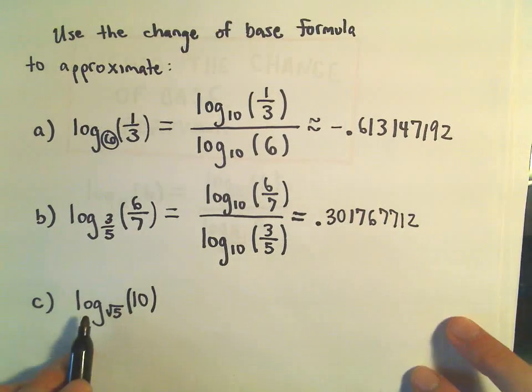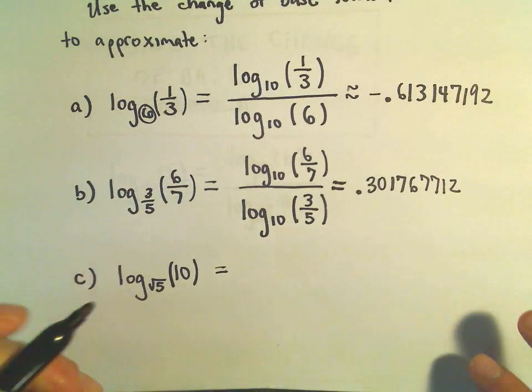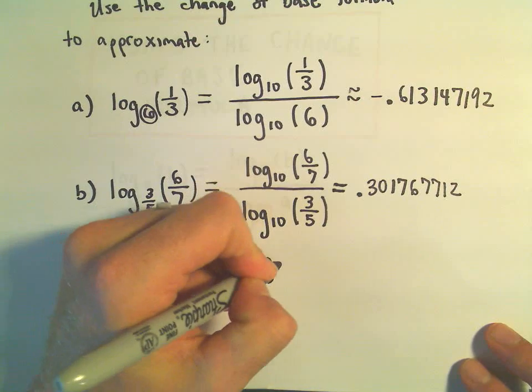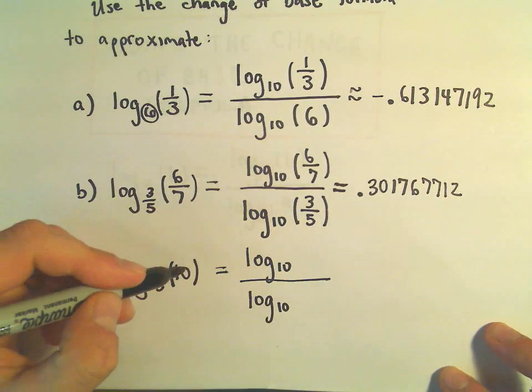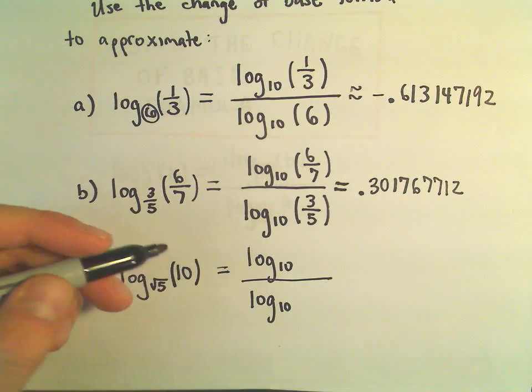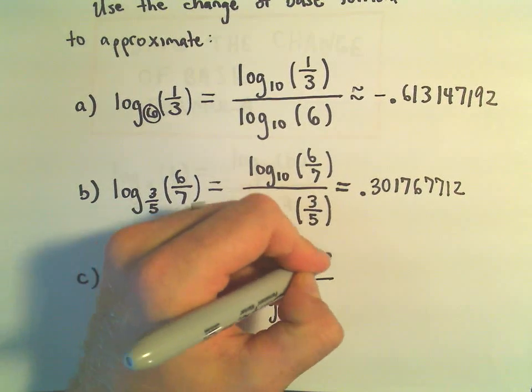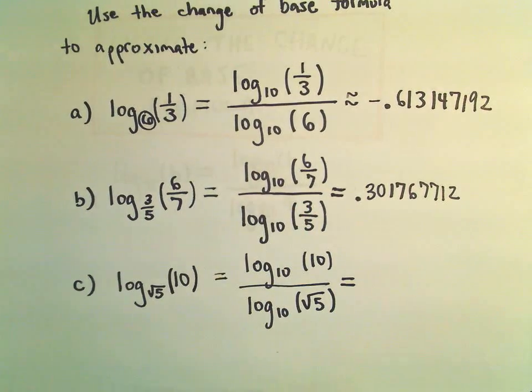One other one here. Log base root 5 of 10. So again, I'm going to use log base 10 and log base 10. Again, you can use any logarithm you want, any logarithm your calculator can do. The 10 goes in the numerator. The square root of 5 goes in the denominator.